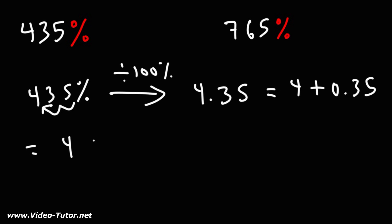So what we now have is 4 plus 7 over 20. When you have a whole number plus a fraction, you can write it as a mixed number. So the answer is going to be 4 and 7/20.